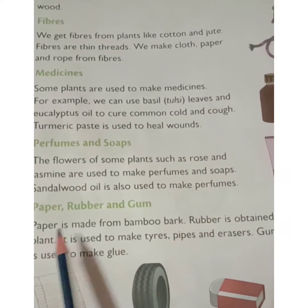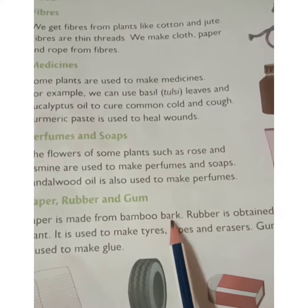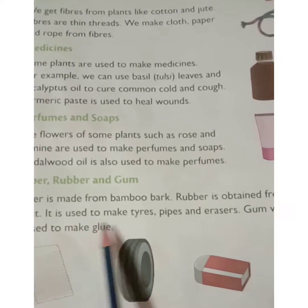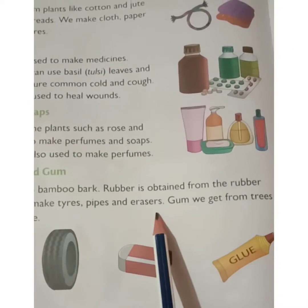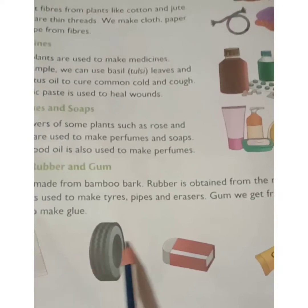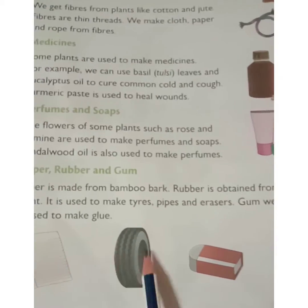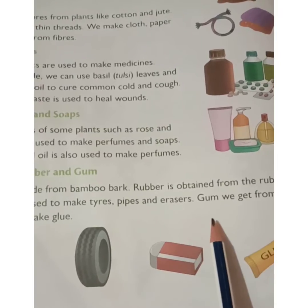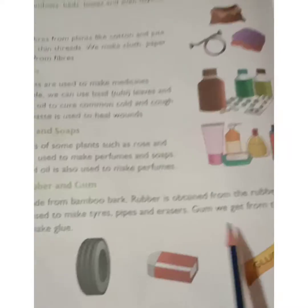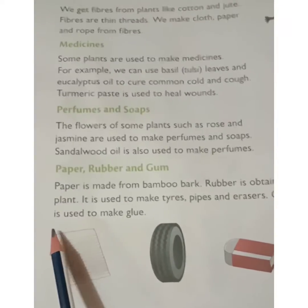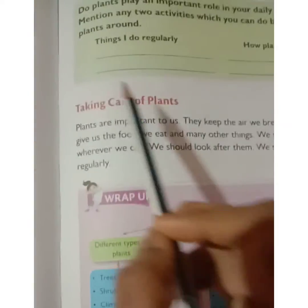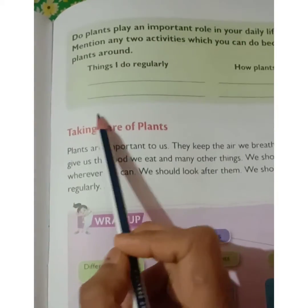Next, paper, rubber, and gum. Paper is made from bamboo bark. Rubber is obtained from the rubber plant and is used to make tires, pipes, and erasers. Gum we get from trees is used to make glue.